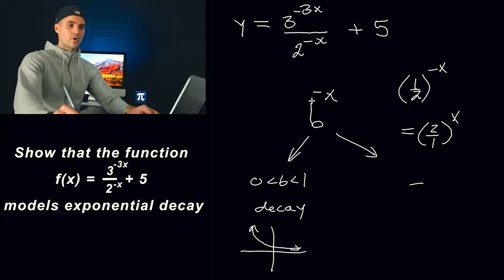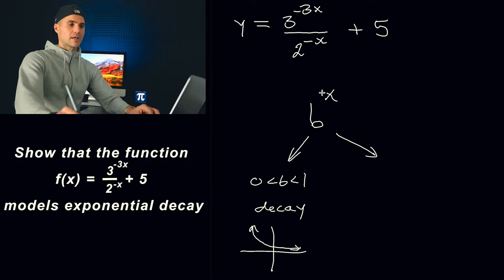Okay so what I'm writing here you got to make sure that that exponent is positive right because if it's negative it means that we're going to basically take a decaying function and then reflect it in the y-axis and it's going to become a growth function. Okay so it basically has to be a positive x and we're going to have to manipulate this function in a way where we're going to have to have a positive x.